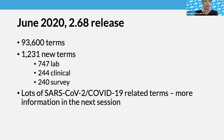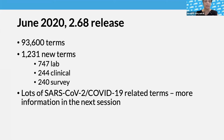About the June 2020 release — that was version 2.68. It included exactly 93,600 terms, including about 1,200 new terms: 747 lab, 244 clinical, and 240 survey. There were lots of terms related to the pandemic, both on the lab side as well as the clinical side. Jamie and David will be talking about that a little bit more after this update.